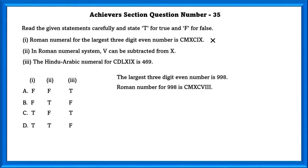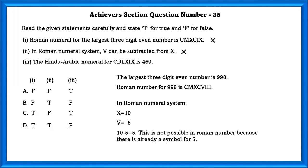Statement II: In the Roman numeral system, V can be subtracted from X. Wrong. Because in the numeral system, X is equal to 10 and V is equal to 5, and 10 minus 5 is equal to 5. This is not possible in Roman numerals because there is already a symbol for 5.